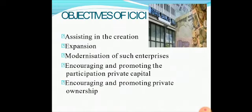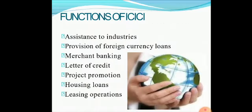The bank has a network of 2,630 branches and 8,003 ATMs in India and has a presence in 19 countries including India. Objectives of ICICI include assisting in the creation, expansion and modernization of enterprises, and promoting participation of private capital and private ownership. Functions of ICICI include assistance to industries, provision of foreign currency loans, merchant banking, letters of credit, project promotion, housing loans, and leasing operations.